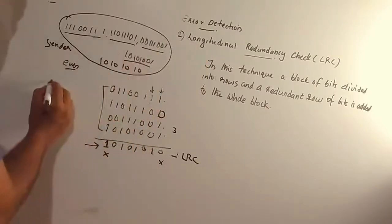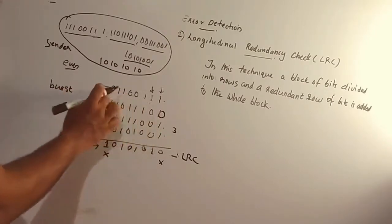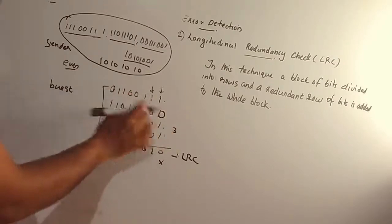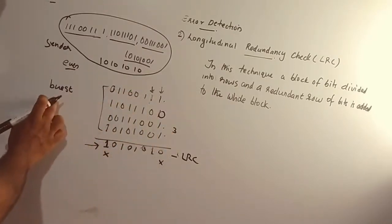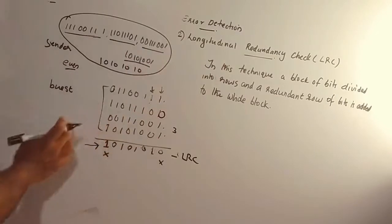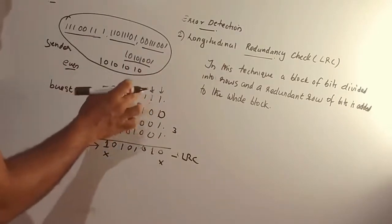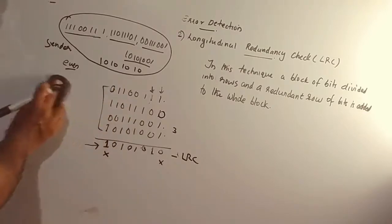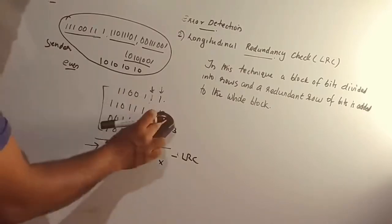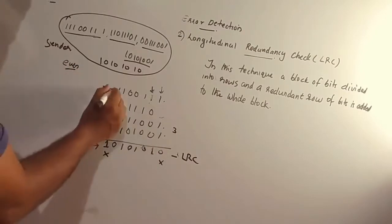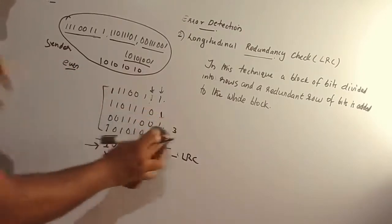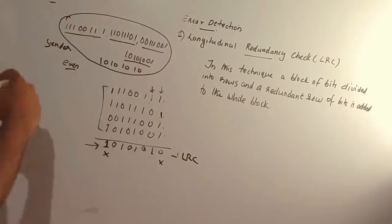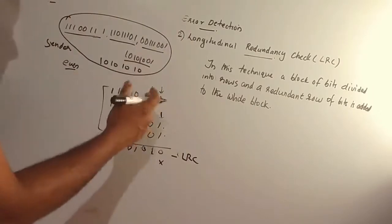LRC can handle single bit errors and burst errors effectively. The longitudinal redundancy check algorithm handles these error types. However, the LRC algorithm will fail in certain cases. Let's see when the LRC algorithm will fail.